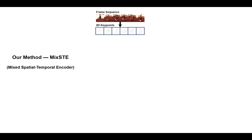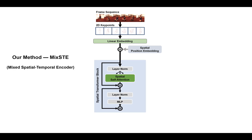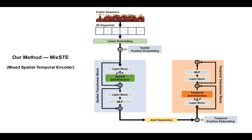MixSTE first takes the video RGB frames into a 2D detector to generate the keypoint sequence, and then the keypoints are projected to hidden features with a linear embedding layer. Spatial positional embedding is applied via random initialization before being fed to the encoders. We follow the vanilla self-attention mechanism to design our spatial transformer block, which focuses on extracting correlations between joints in a single frame. We then separate different joints so that different motions can be learned in the temporal encoder, which focuses on learning motion trajectories of each joint over the frame sequence. The hidden features are then fed back to the spatial transformer block, constructing a loop — this is our alternating design, repeated D times.